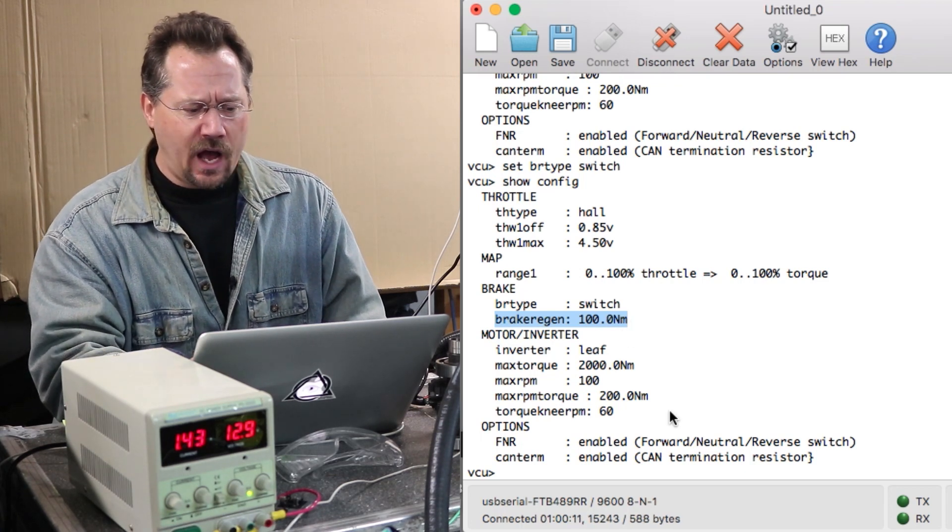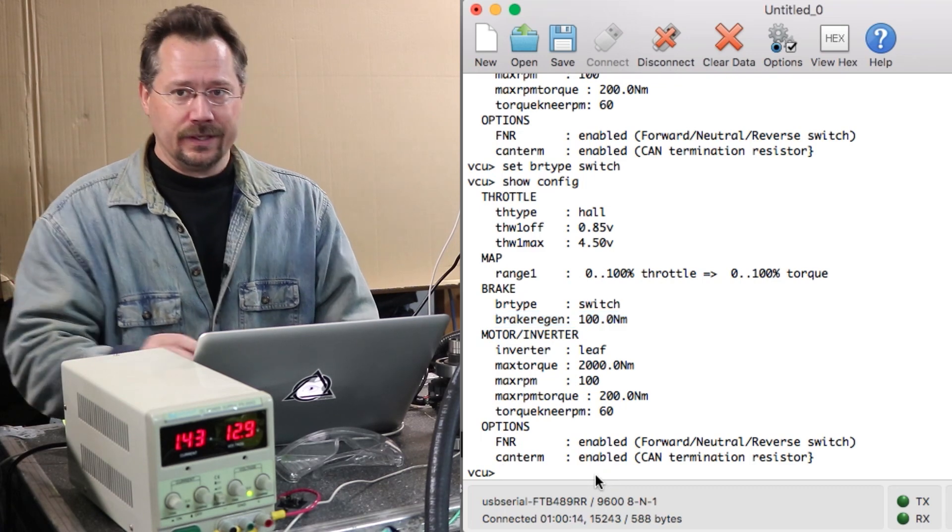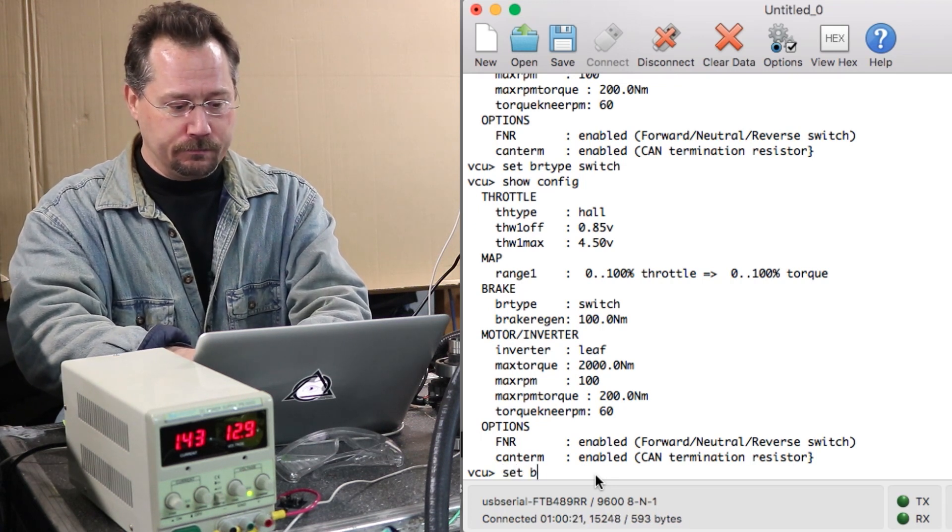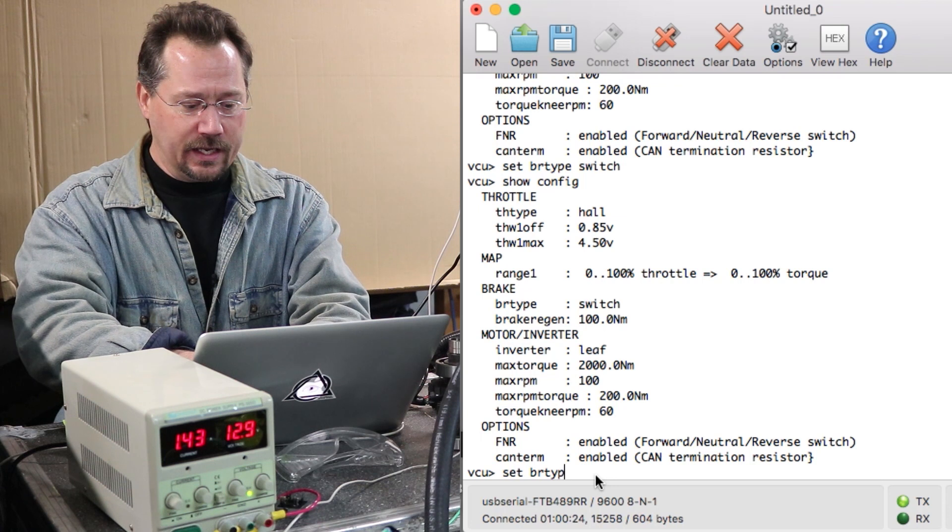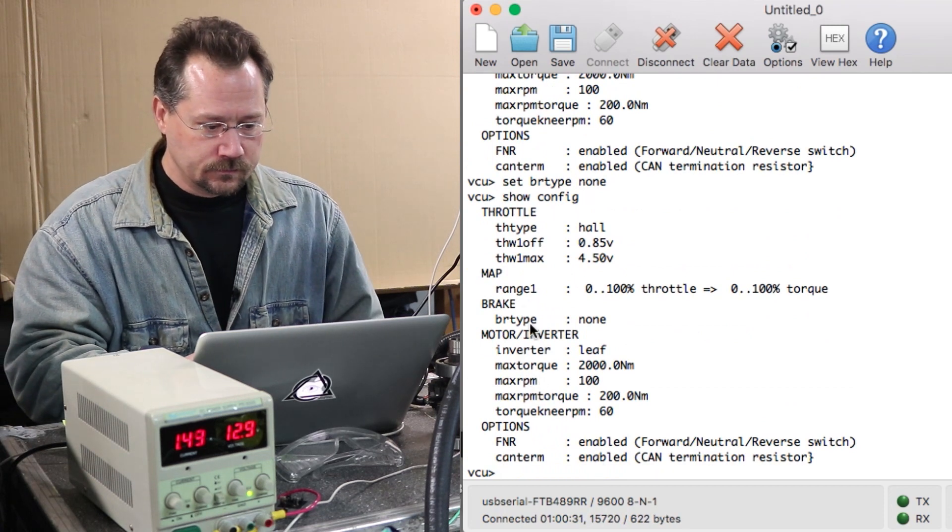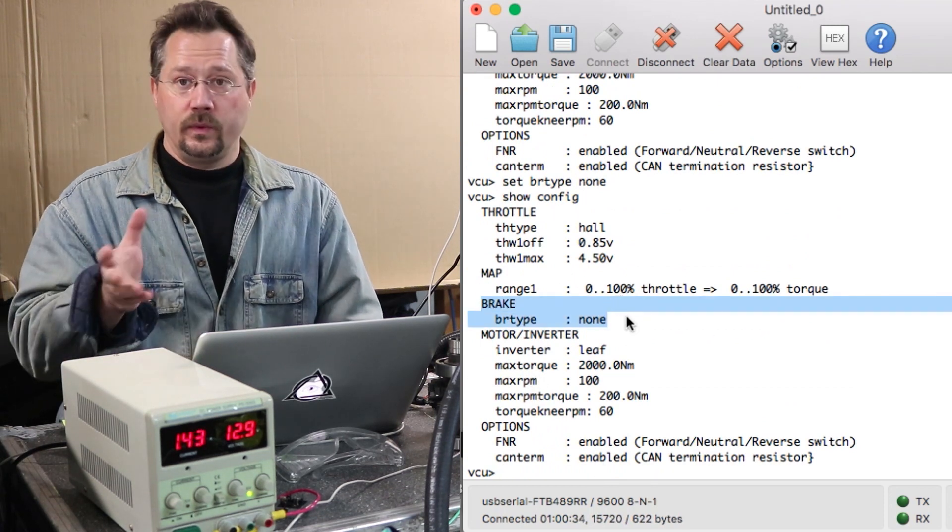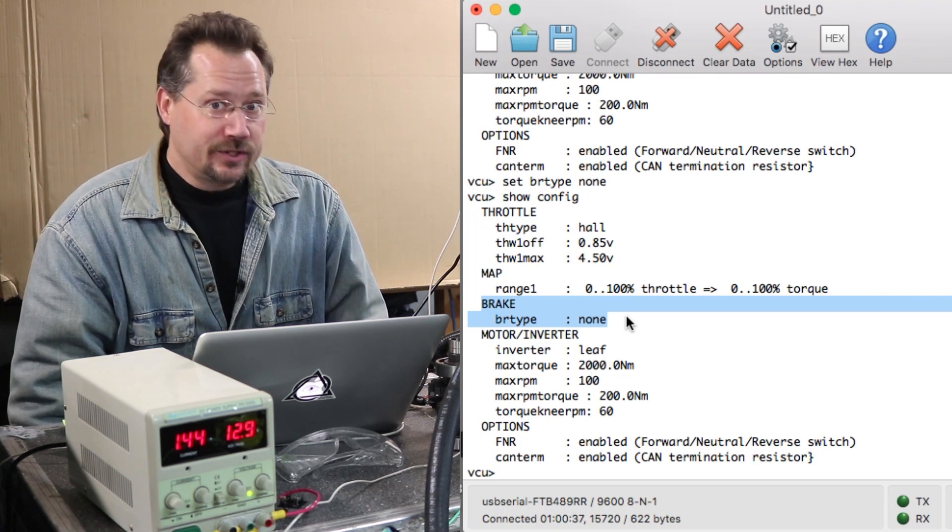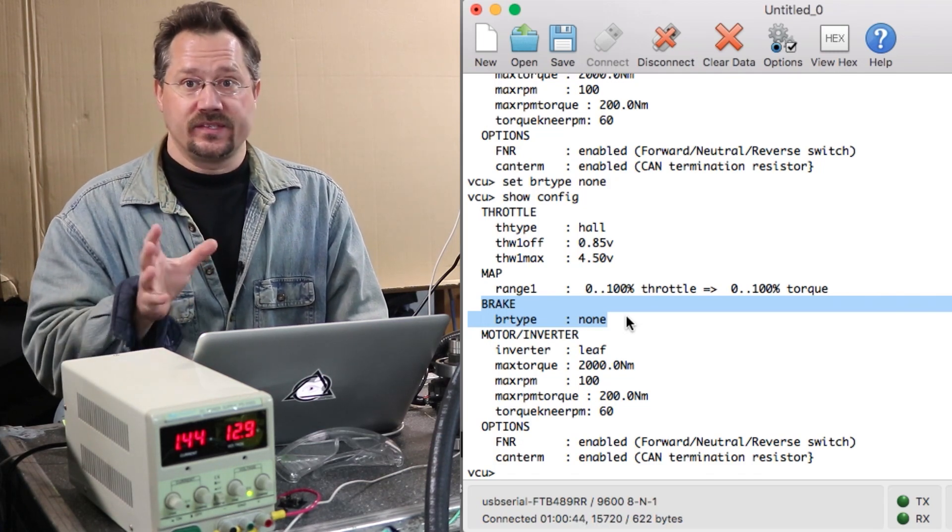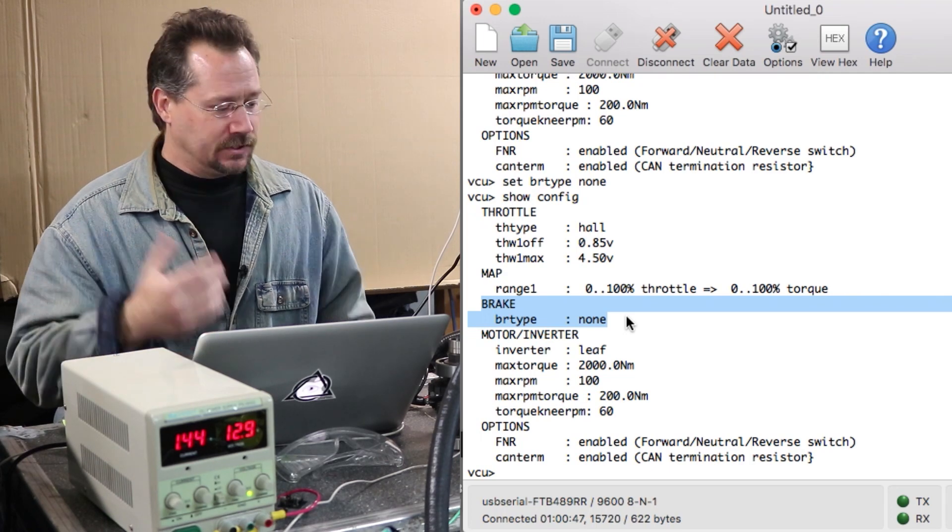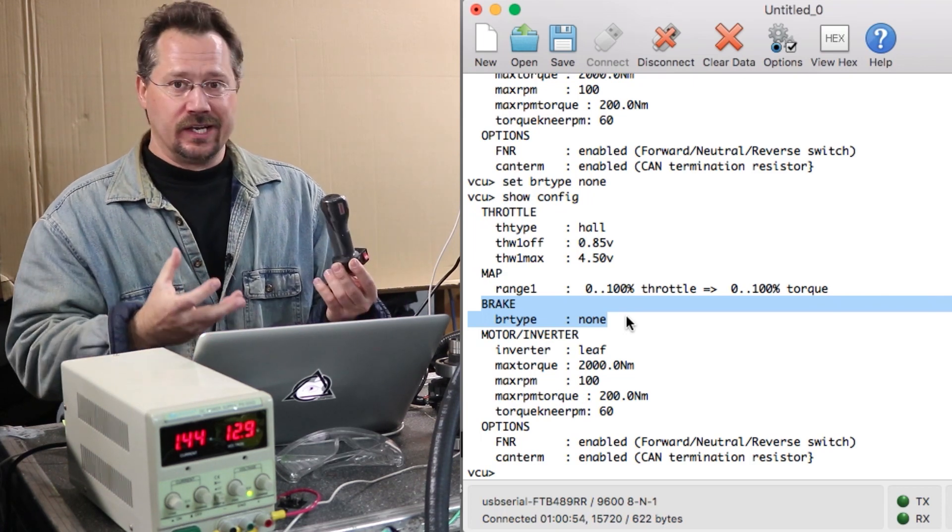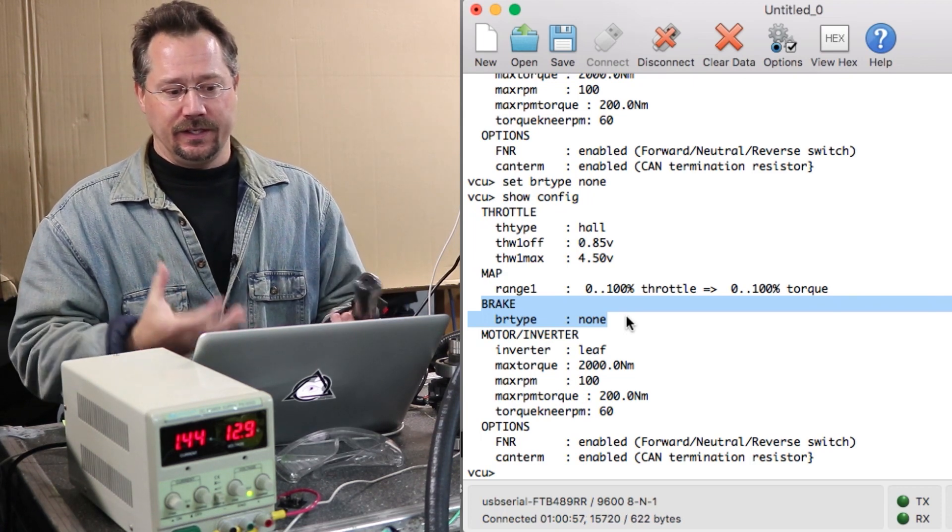And the other option for the brake type, and this is going to sound a little weird, is just none and I'll show you why it's weird. Set brake type none, show config. So now we expect no regenerative braking when using the brakes except we still want regenerative braking in this setup.